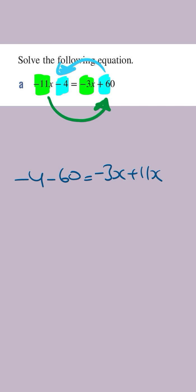You've got minus 4 minus 60. This is going to be minus 64. And then the right hand side, you've got minus 3x plus 11x. And so this is going to become 8x. Now you're back to our basic equation.